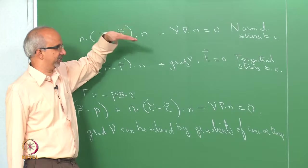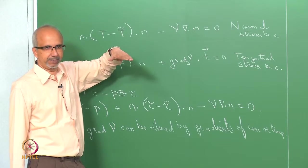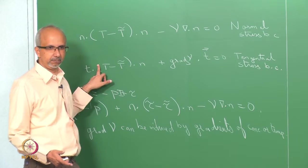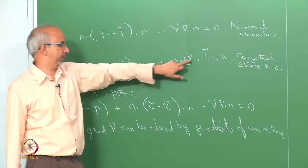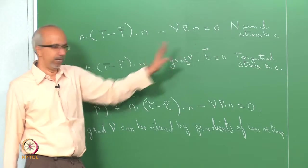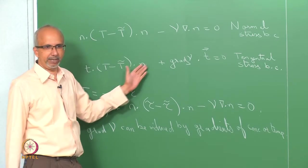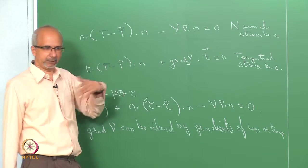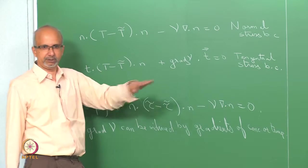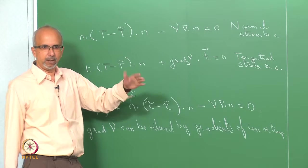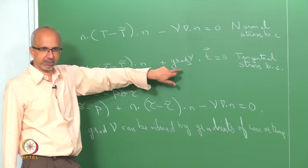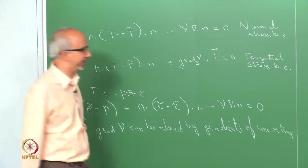The stress T exerted by the gas is 0 because it is inviscid. Normally you neglect the gradients in the surface tension, so that term becomes 0, and what you are left with is T·N = 0, which is just the zero shear stress condition. But now that term is not 0, so we want to see how this gets modified — that is the idea.